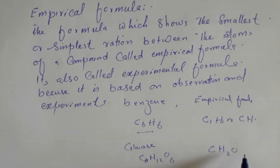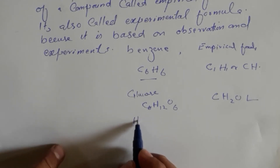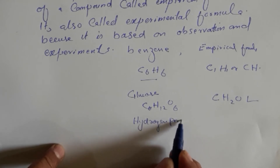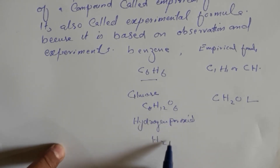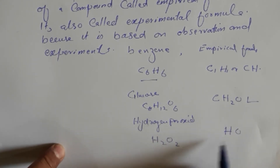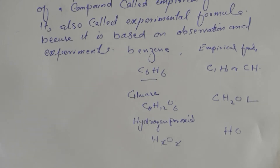The empirical formula of glucose (C₆H₁₂O₆) is CH₂O. For hydrogen peroxide (H₂O₂), the empirical formula is HO. These are the empirical formulas derived from their respective molecular formulas.